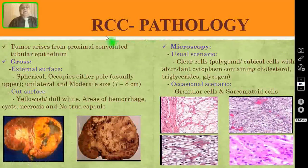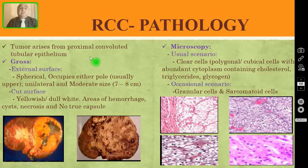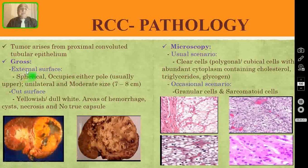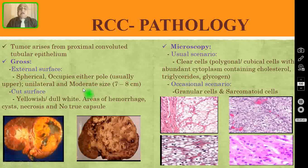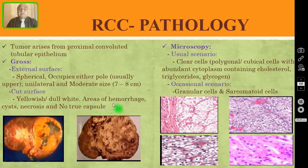Coming to the pathology of renal cell carcinoma: the tumour arises from the proximal convoluted tubular epithelium, meaning it arises from the cortex of the kidney. On gross appearance, the external surface is spherical in shape. It occupies either the upper or lower pole, but most commonly the upper pole. It is unilateral and of moderate size, between 7 to 8 centimetres. The cut surface is yellowish in colour or dull white. There are areas of haemorrhage, cyst, and necrosis, but it is not a true encapsulated tumour.